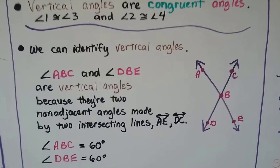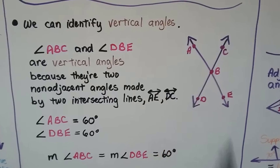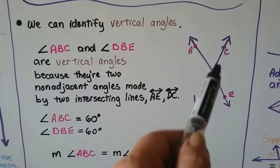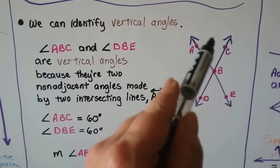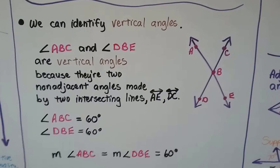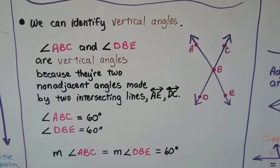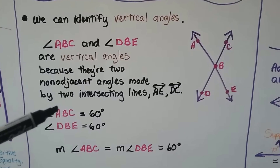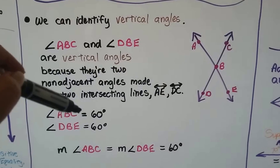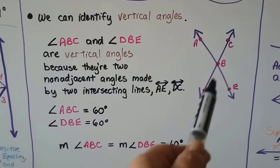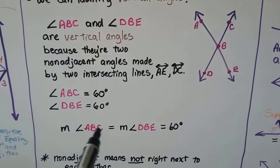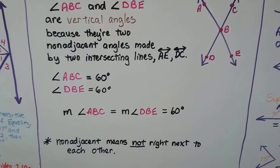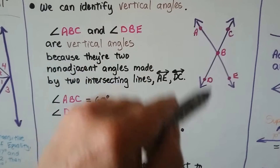To identify vertical angles in a diagram: B is the intersection point. Angle ABC and angle DBE are vertical angles — made by two intersecting lines, AE and DC. The measure of angle ABC equals 60 degrees, and the measure of angle DBE also equals 60 degrees. Remember, non-adjacent means not right next to each other — vertical angles are across from each other.